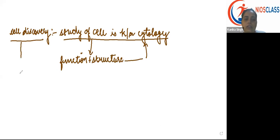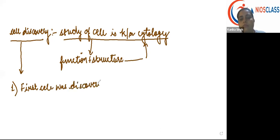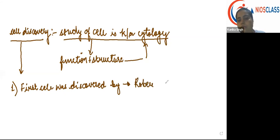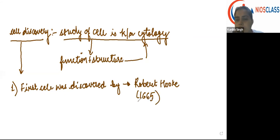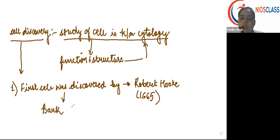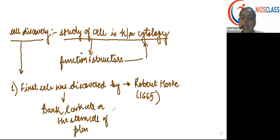The first point of cell discovery is that the first cell was discovered by scientist Robert Hooke in the year 1665. He discovered the first cell. This discovery was done by Robert Hooke from the cork — he took the cell of bark, the cork cell, or the stem cell of a plant. And this cell was actually a dead cell which he discovered.